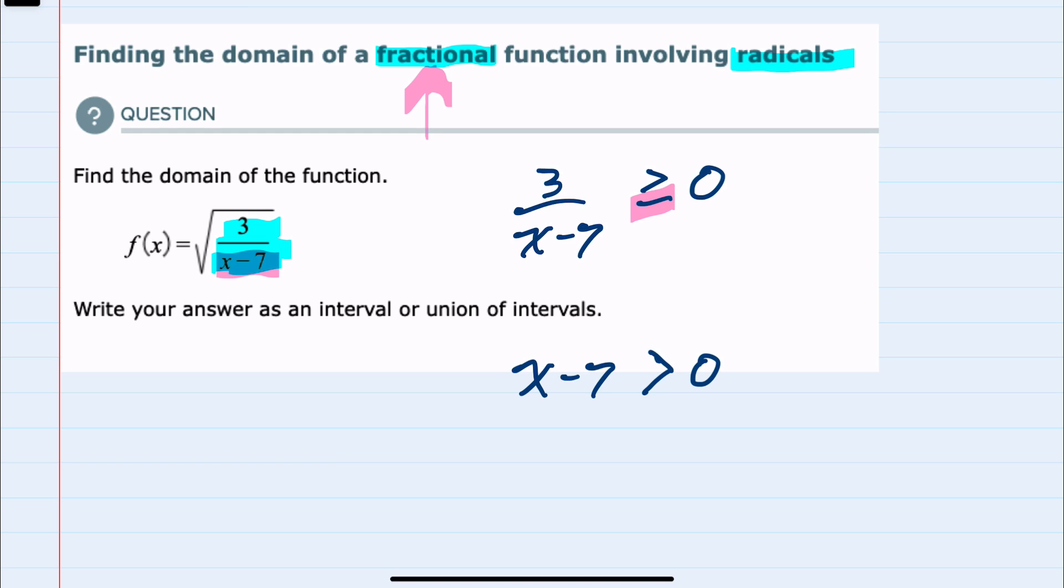And since we know these are the values for which we can have a fraction and we can take a square root, I can solve this for x by adding the 7 over, and we know that x is greater than 7.